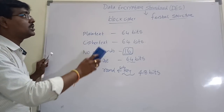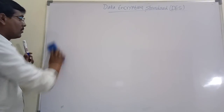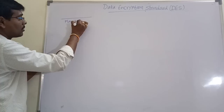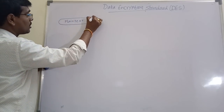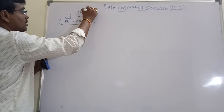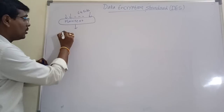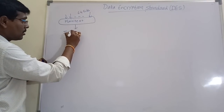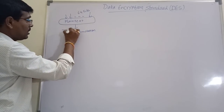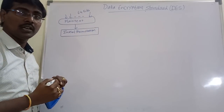First we will display the entire procedure of DES algorithm. The plaintext size is 64 bits, and it is first applied into initial permutation. What is initial permutation? Generally, the bits are represented in the format 1, 2, 3 ... 63, 64.